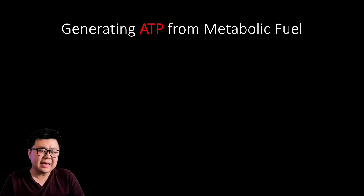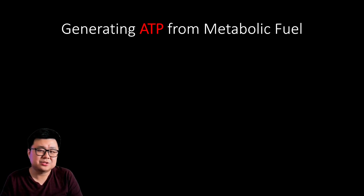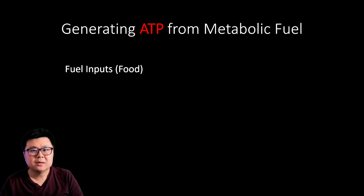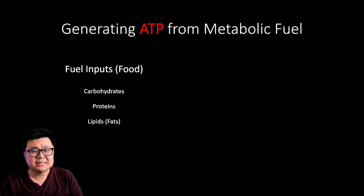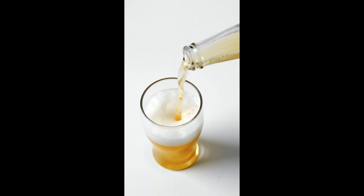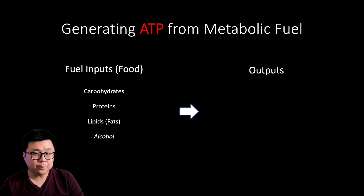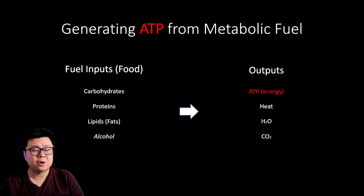Now that we know the relationship between ATP and energy, let's go back to metabolism and focus on how we extract energy from our metabolic fuel, also known as food. Our metabolic fuel is considered an input — these can be macromolecules such as carbohydrates, proteins, lipids, and even alcohol. Our body takes these inputs and through metabolic pathways converts them to outputs: the main one is energy and ATP, but we also generate heat, water, and carbon dioxide.